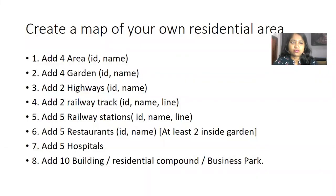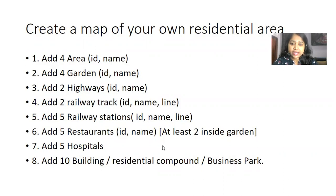Hello everyone. Today we will see how to create a map of your residential area. Here is our question: we have to add four areas with two columns, ID and name. We have to add four gardens, two highways, two railway tracks, five railway stations, five restaurants, at least two inside the garden, five hospitals, ten buildings, residential compounds and business parks.